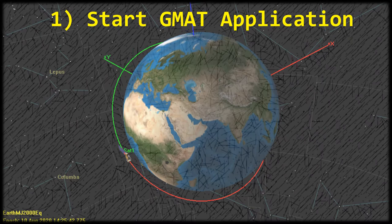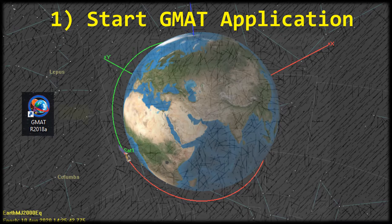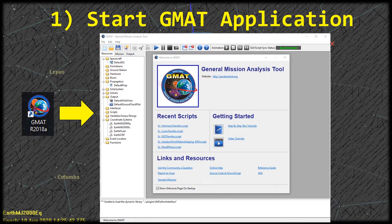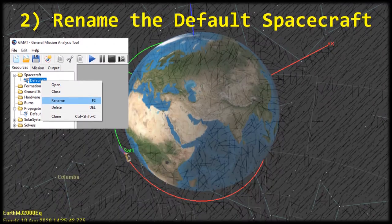For the first step let's go ahead and start the GMAT application — look for a shortcut like this. When you start it up it's going to open up the welcome page. Go ahead and click that X in the top right to close it. If this is the first time you're opening GMAT, it'll have some default objects and properties already opened in the project viewer on the left. Let's start editing some of those objects.